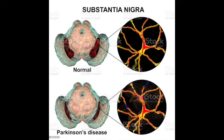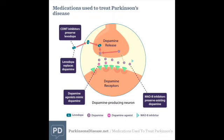Dopamine agonists (bromocriptine, pramipexole, ropinirole — BPR): directly stimulate dopamine receptors; less motor adverse effects but less effective than levodopa. Can be first line in younger patients (under 65) to delay levodopa and preserve efficacy. If insensitive to levodopa, likely insensitive to dopamine agonists. Adverse effects similar to levodopa plus more non-motor effects: sleep disturbances, somnolence, dizziness, and impulse control disorders such as compulsive shopping, gambling, or hypersexuality — not typically found with levodopa.